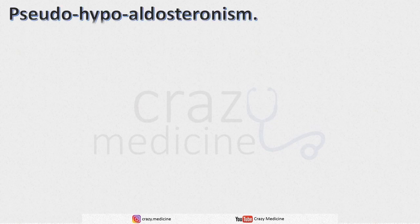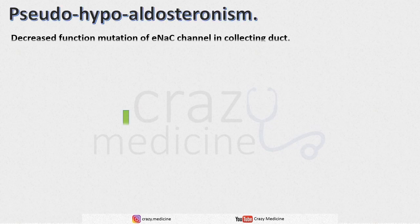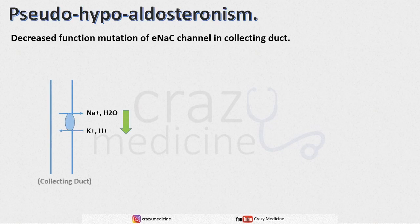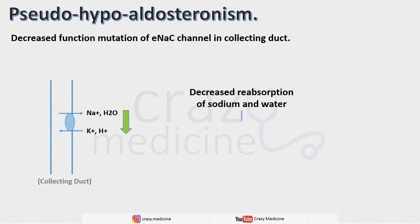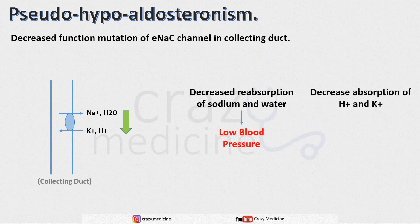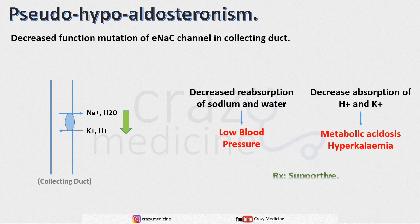Next is pseudo-hypoaldosteronism. Here there is a loss-of-function mutation of the ENaC channel in the collecting duct, whereas in Liddle syndrome there was a gain-of-function mutation. So most features will be opposite to Liddle syndrome: due to decreased sodium and water reabsorption there will be low blood pressure, and due to increased retention of hydrogen and potassium ions there will be metabolic acidosis and hyperkalemia. The treatment of this condition is supportive — i.e., salt replacement.